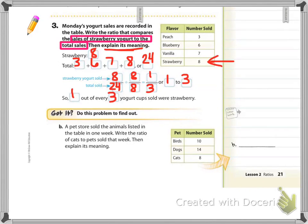Check your work. Obviously, strawberry is the focus, and we do have to total all of the flavors. Peach, blueberry, vanilla, and strawberry would be a total of 24. If we are comparing strawberry to the total sales, then strawberry is 8 to a total of 24. 8 over 24 can be simplified. We need to divide by the GCF, which is 8, and we simplify this down to 1 third, or 1 to 3. So 1 out of every 3 yogurt cups sold were strawberry. Now I want you to try the Got It using the table below, and follow the directions. Come back and check your answers.